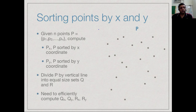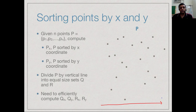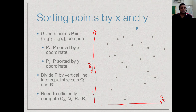Let us look more closely at how we do this. Before doing the recursion, given our set of points P, we compute two sorted orders of it. We sort the points by x coordinate from left to right and call this Px, then sort by y coordinate and call this Py. So from P we produce two lists: one sorted by x and one sorted by y. We can do this in O(n log n) time at the beginning.